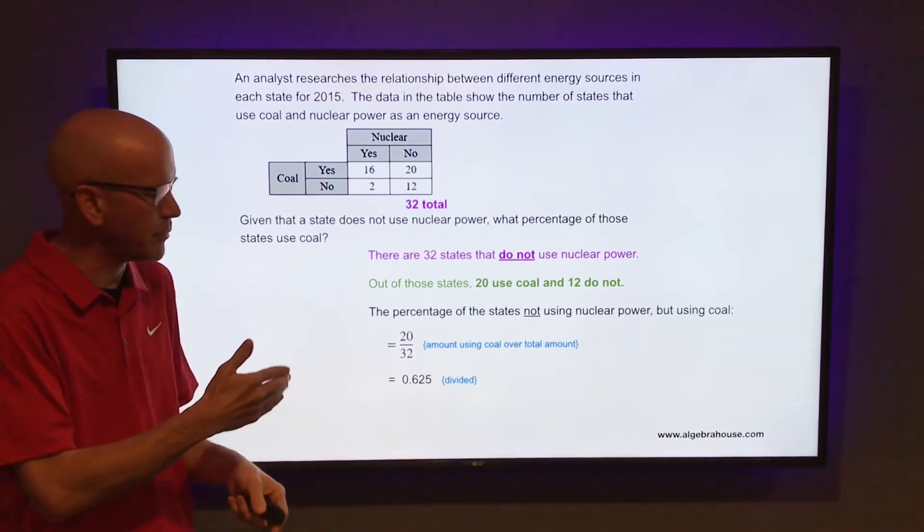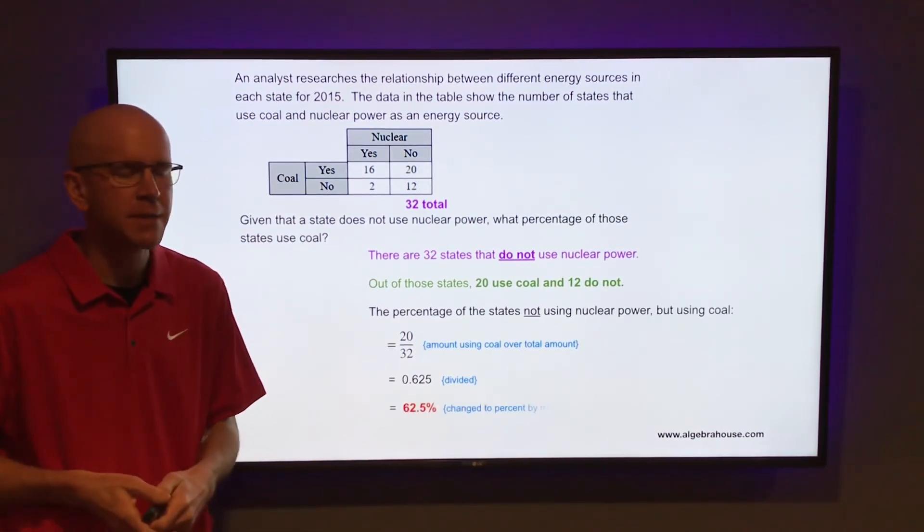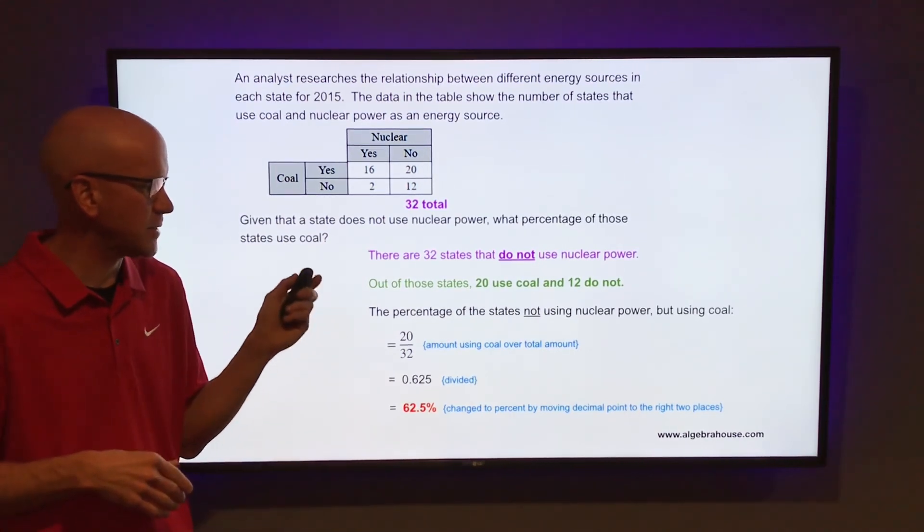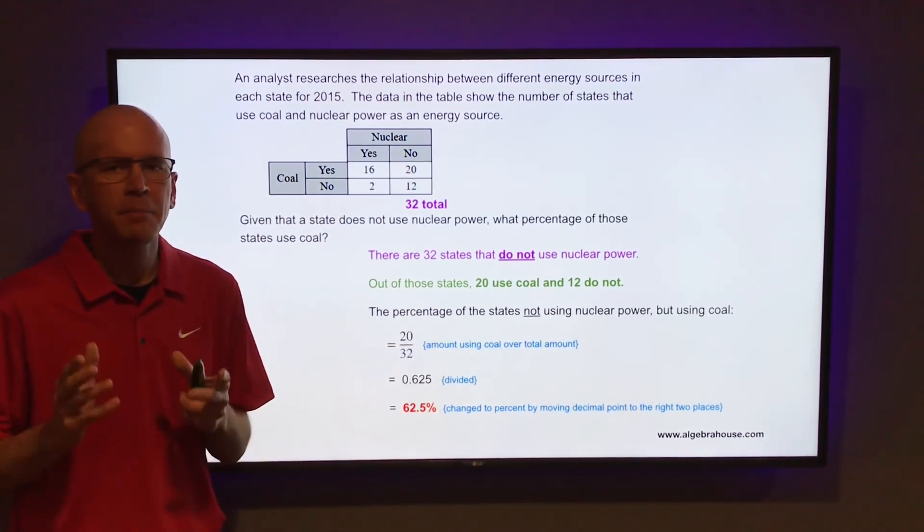Change that to a percent by moving the decimal point to the right two places, turns out to be 62.5 percent. So 62.5 percent of the states do not use nuclear power but they do use coal.